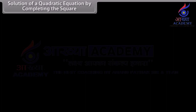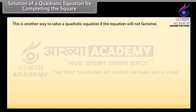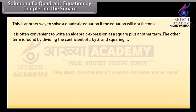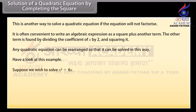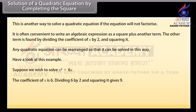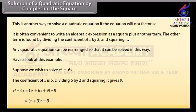Solution of a quadratic equation by completing the square. This is another way to solve a quadratic equation if it will not factorize. It is often convenient to write an algebraic expression as a square plus another term. The other term is found by dividing the coefficient of x by 2 and squaring it. For example, rewrite x squared plus 6x as a square plus another term. The coefficient of x is 6; dividing 6 by 2 and squaring gives 9. So x squared plus 6x equals x squared plus 6x plus 9 minus 9, which equals (x plus 3) squared minus 9.